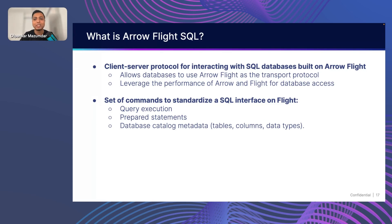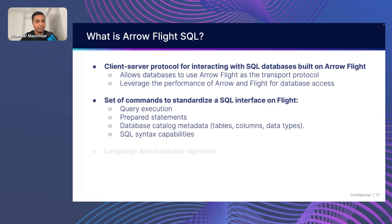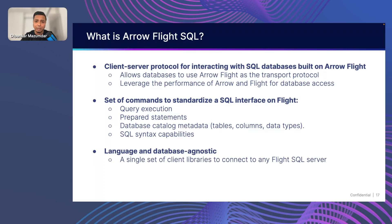More concretely, Arrow Flight SQL is a set of commands to standardize a SQL interface on Flight. It standardizes things like how you do query execution — how you submit a query and get results back, including prepared statements. Also catalog access — how you access metadata around tables and columns. And the SQL syntax capabilities, because even with a standard interface like ODBC and JDBC, different databases support different subsets of SQL syntax. And one really nice thing: it is language and database agnostic. You could use Python, Go, Rust, or whatever. If you're implementing this once on the client side, you can connect to any Flight SQL server that has its endpoint open.